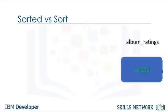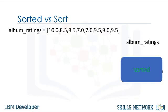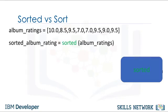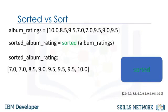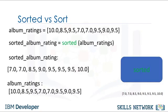There are two ways to sort a list. The first is using the function sorted. We can also use the list method sort. Methods are similar to functions. The function sorted returns a new sorted list or tuple. Consider the list album_ratings. We can apply the function sorted to the list album_ratings and get a new list sorted_album_rating. The result is a new sorted list. If we look at the list album_ratings, nothing has changed. Generally, functions take an input — in this case a list — and produce a new output, in this instance a sorted list.